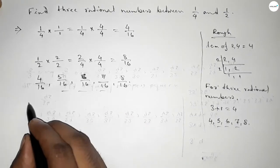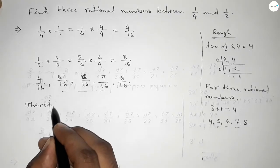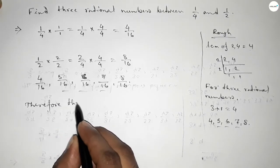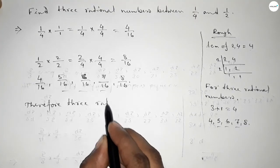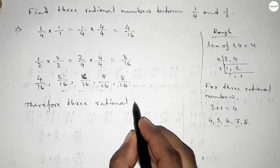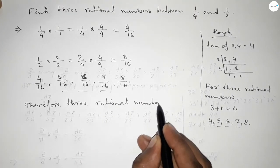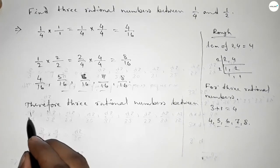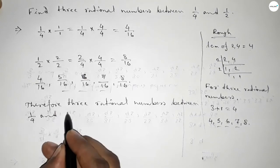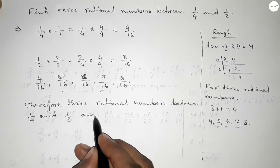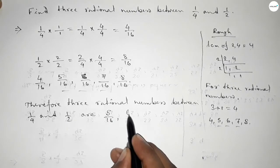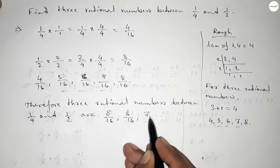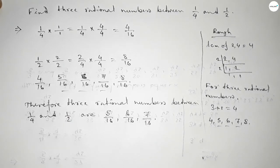Therefore, three rational numbers between 1 over 4 and 1 over 2 are: 5 over 16, 6 over 16, and 7 over 16. That's all, thanks for watching!